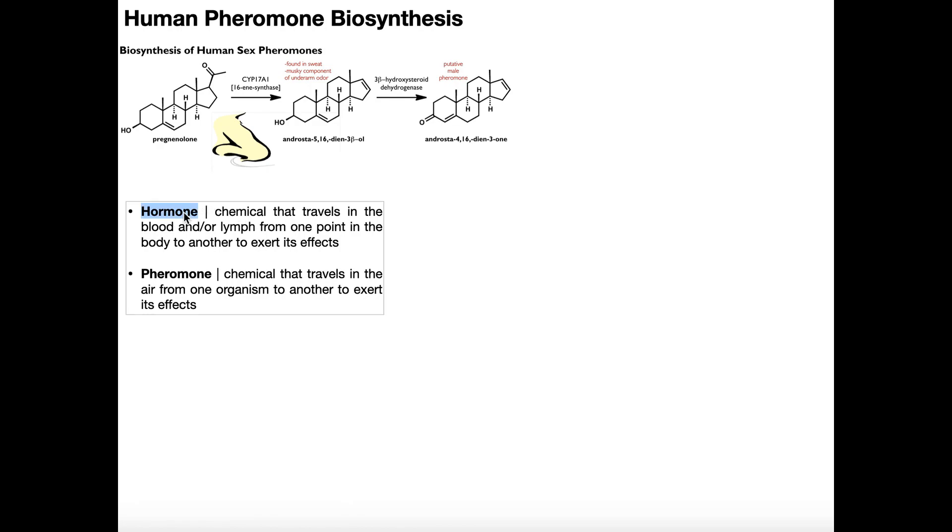So for example, epinephrine is a hormone. It's released by the adrenal medulla, which is part of the adrenal gland. It's dumped directly into the blood and it travels to a variety of target tissues all over the body.